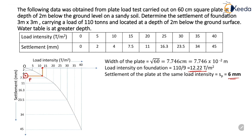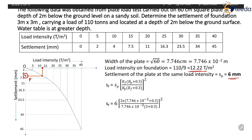Settlement of the foundation at the same load intensity will be obtained from the formula. Putting the corresponding values, we obtain Sf = 6 × [(3 × 7.746 × 10^-2 + 0.3) / (7.746 × 10^-2 × 3 + 0.3)]².